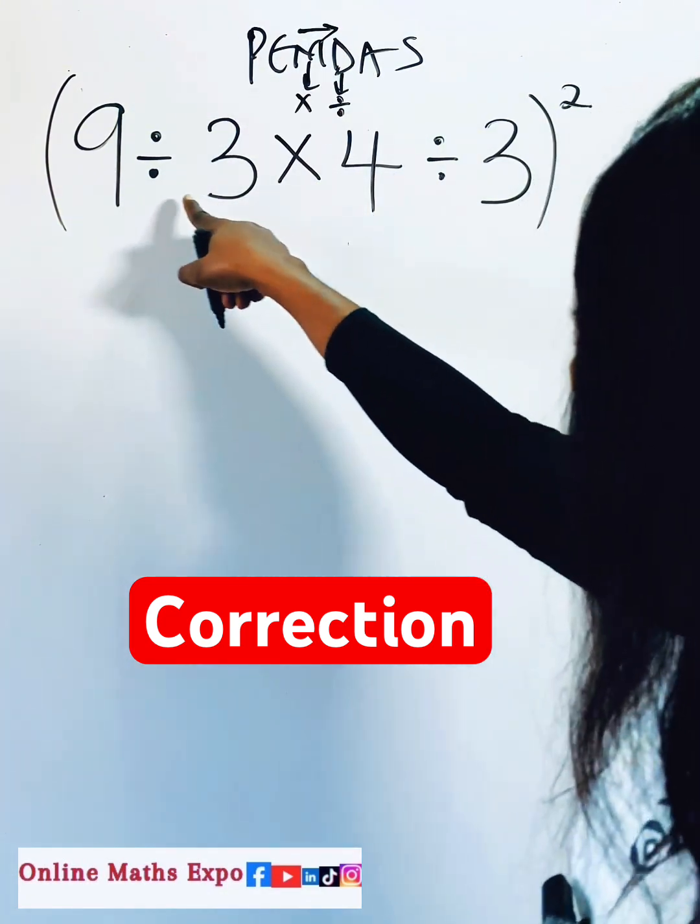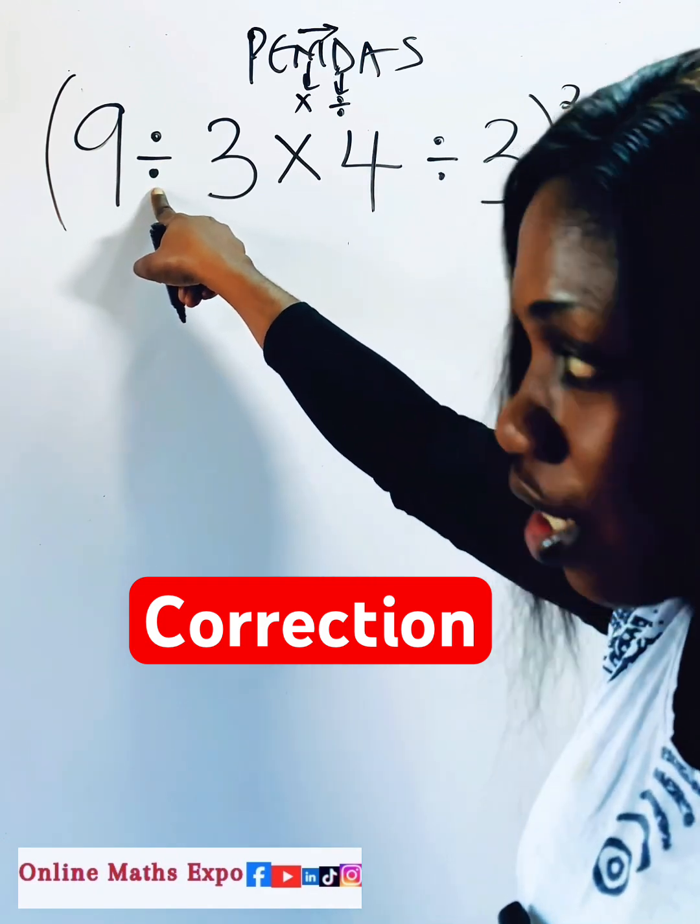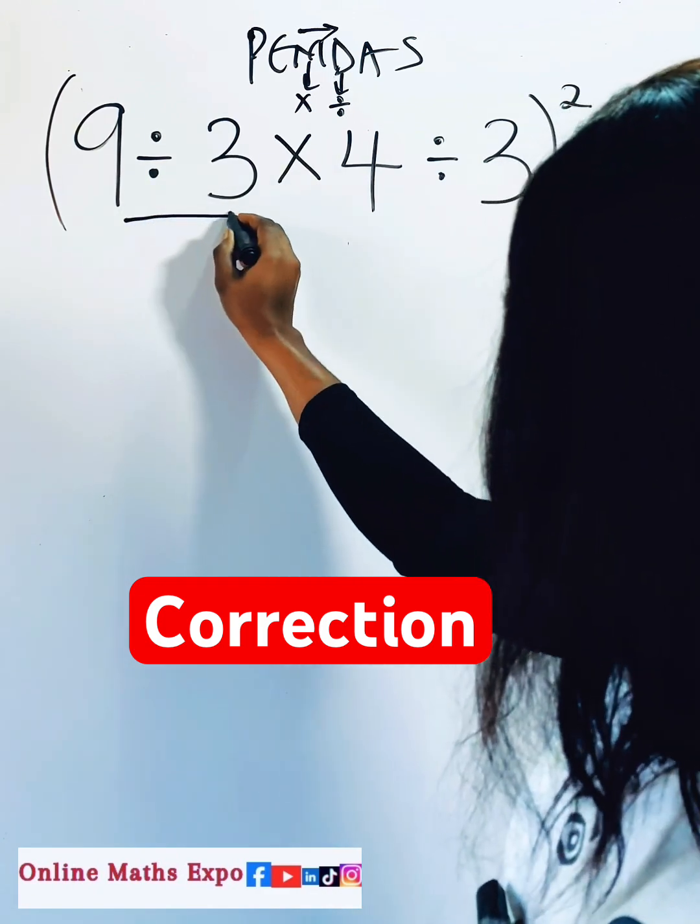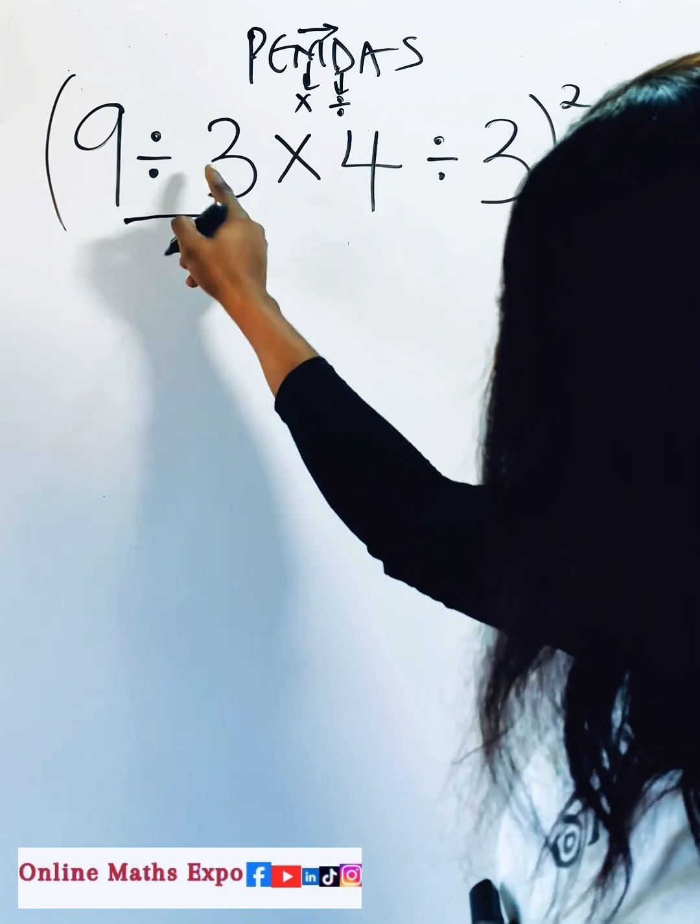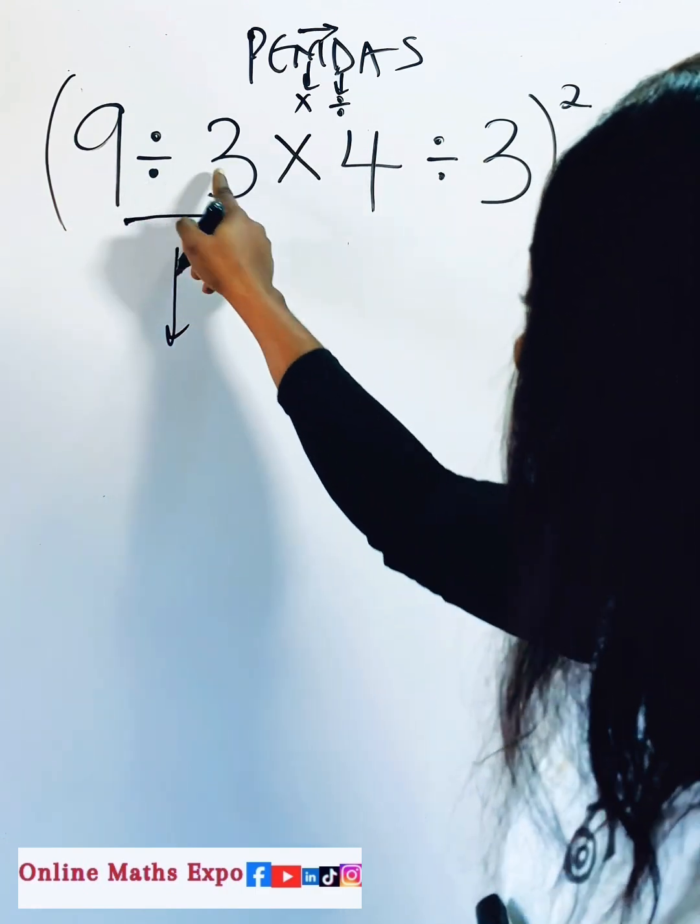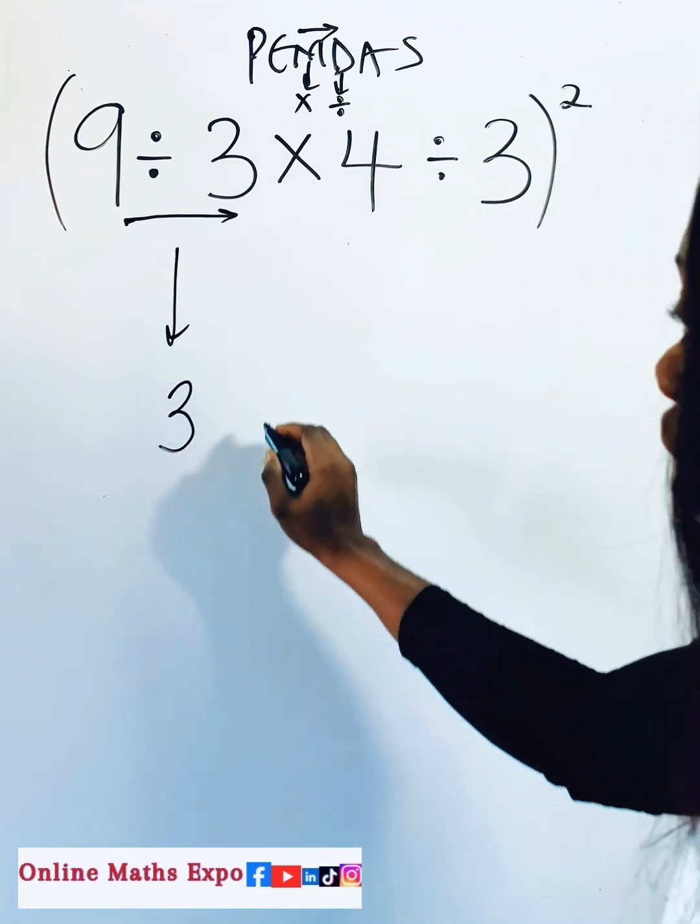So beginning looking at this, you observe that division came first. So we're going to work with this first. So we are going to do 9 divided by 3. And when you divide 9 by 3, it gives you 3.